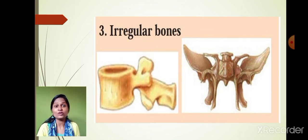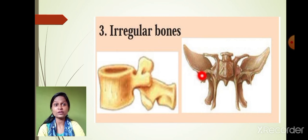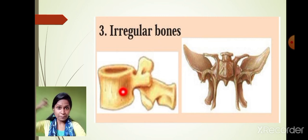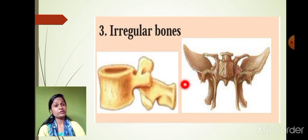The irregular bone is a bone which doesn't have a particular shape or structure. The vertebrae is an example of an irregular bone, present in our backbone region. Our backbone or spine is made up of these bones. This irregular bone is also present in our waist region and is called the hip bone as well.